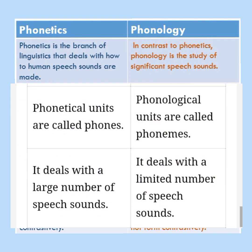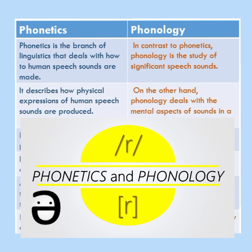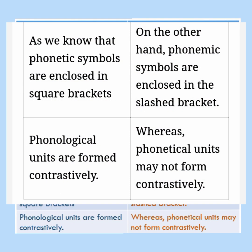Phonological units are called phonemes. Phonetic symbols are enclosed in square brackets, whereas phonemic symbols are enclosed in slashes. Phonological units are formed contrastively, whereas phonetic units may not be formed contrastively.